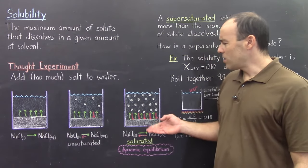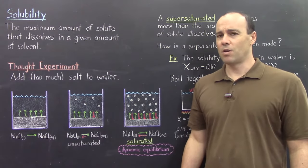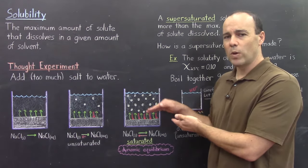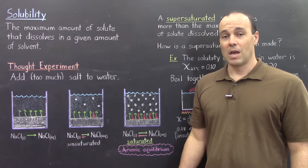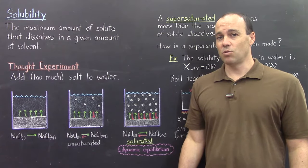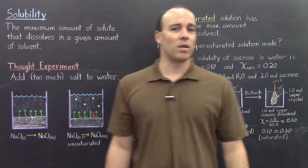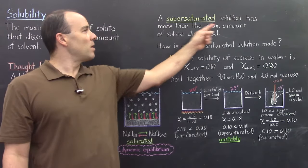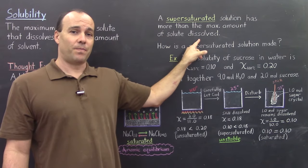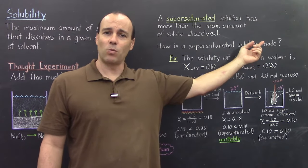Now since the concentration is saturated, you might think that it's not possible to have a larger concentration than this dissolved. This is the limiting concentration — we cannot exceed this concentration. However, that's not entirely true. It is possible to have a solution that has too much solute dissolved, and that's called a supersaturated solution. A supersaturated solution has more than the maximum amount of solute dissolved.